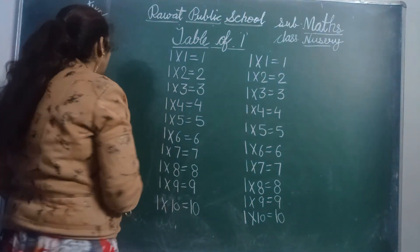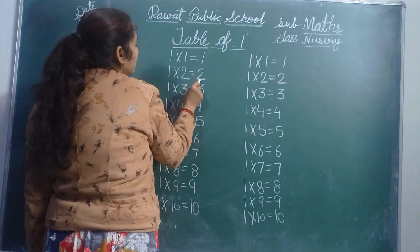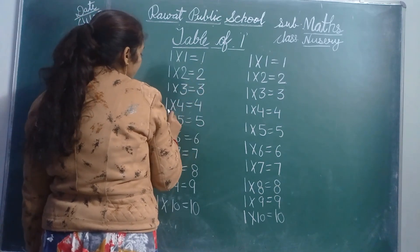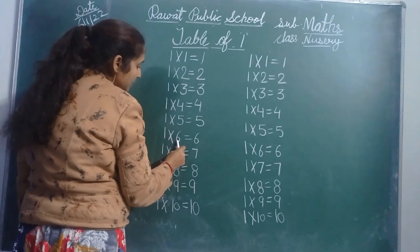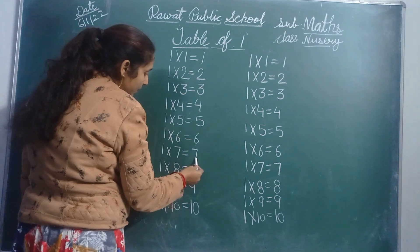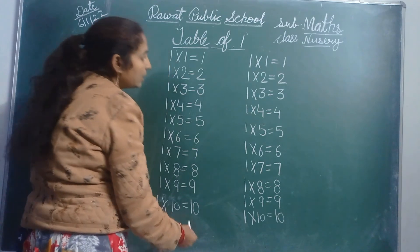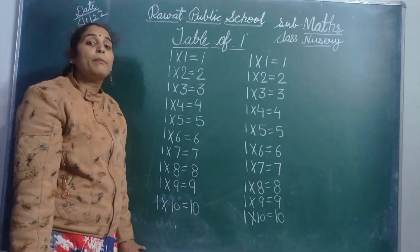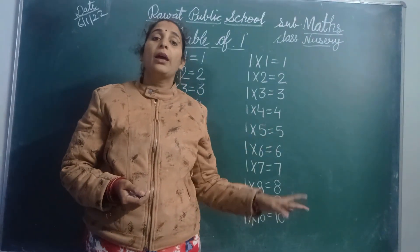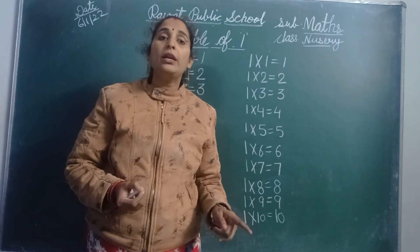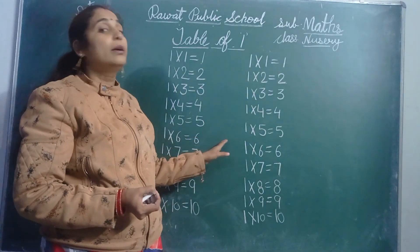Speak and write 2 times. And 2 pages — CW and HW. Repeat again: table of 1 — 1 one is 1, 1 twos are 2, 1 threes are 3, 1 fours are 4, 1 fives are 5, 1 sixes are 6, 1 sevens are 7, 1 eights are 8, 1 nines are 9, 1 tens are 10. Do this in your math notebook, learn it, and write it down.